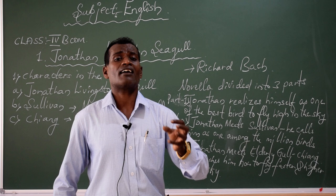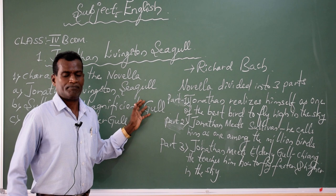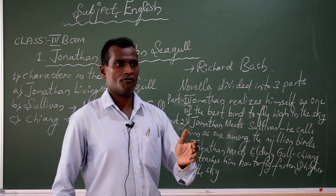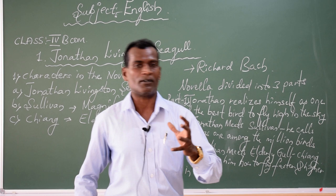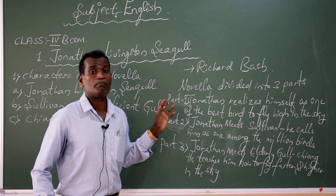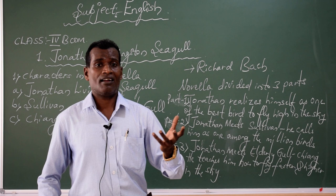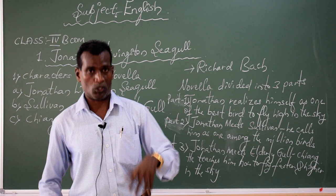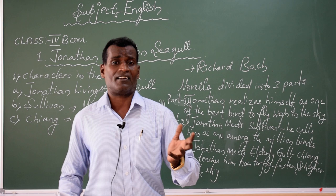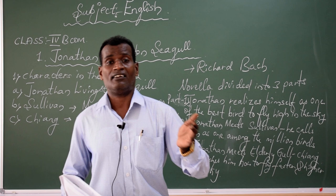By looking at Jonathan Livingstone Seagull, we come to know that no one is perfect in the world. But unless and until we don't put in practice, continuous efforts, and labor in order to achieve a goal, we are not going to reach our goals and objectives in life. Every bird has an ambition, every bird has a vision, and every bird has an objective in order to reach the goal. Every bird in the flock appreciates and admires Jonathan Livingstone Seagull — such a wonderful bird that flies so fast and so high in the sky.